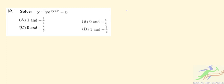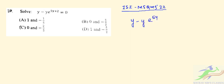Welcome to Short of Sir Classes. This is question 19 from ISI MS in Quality Management Science 2022. We have to solve the equation y minus y·e^(5y+2) equal to 0. If we take y out as a common factor, we get y times (1 minus e^(5y+2)) equal to 0. From here we get y equal to 0, or...